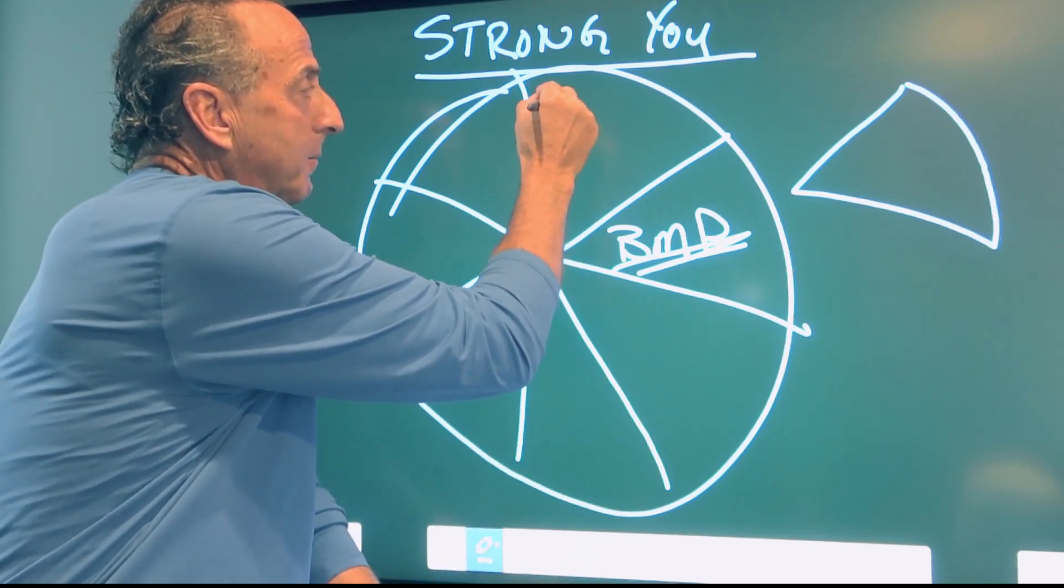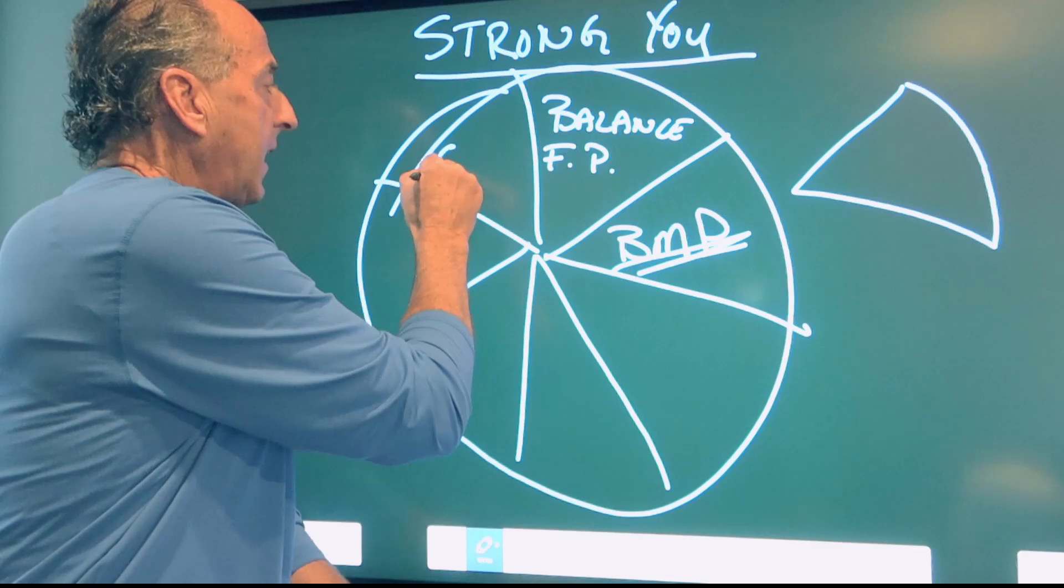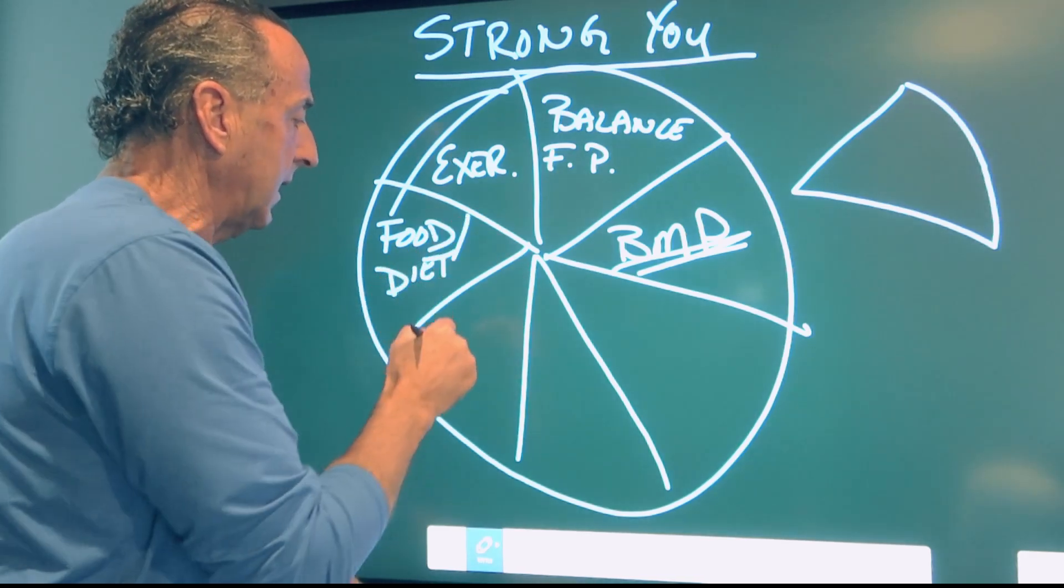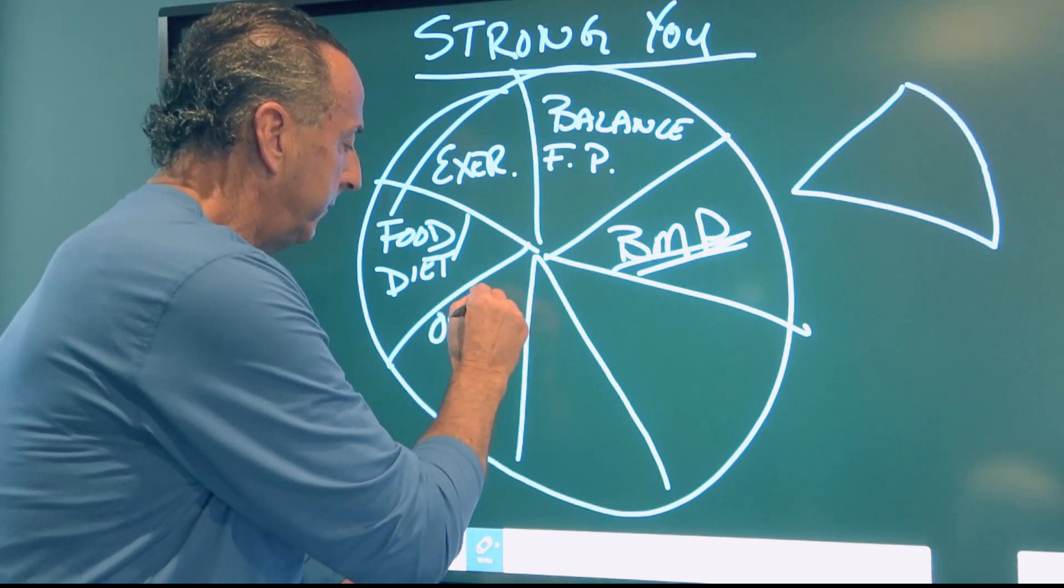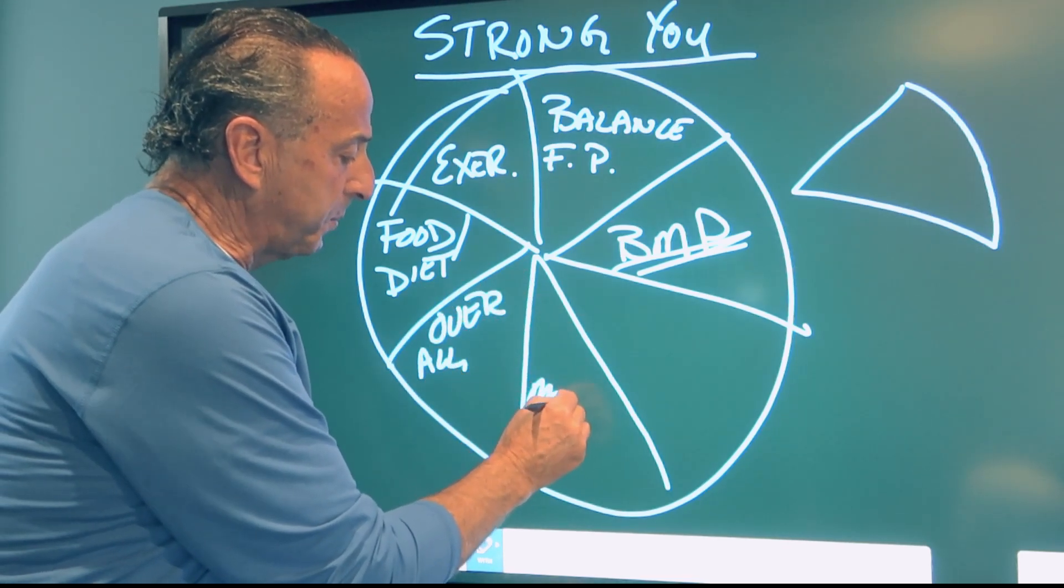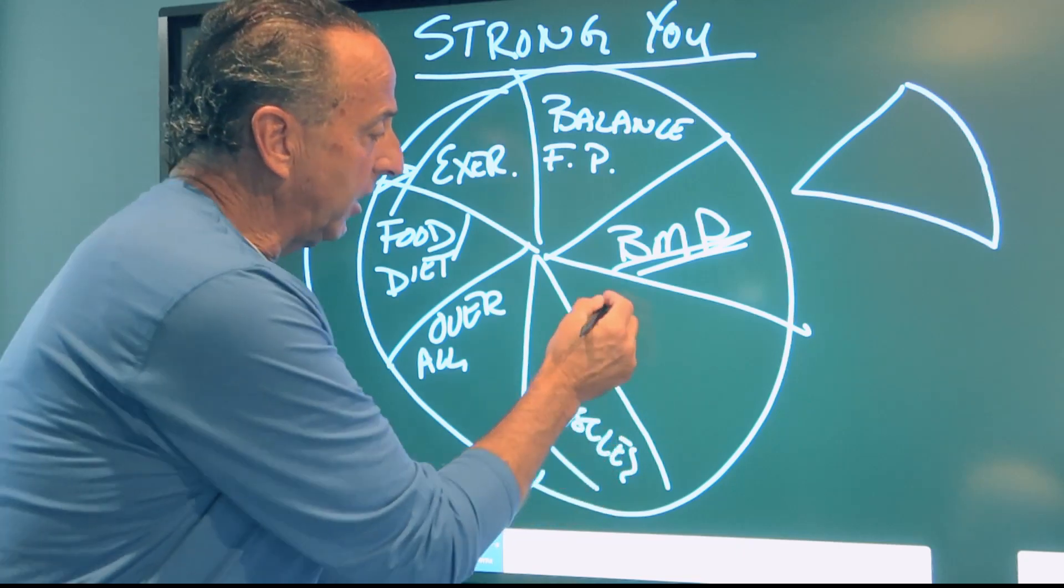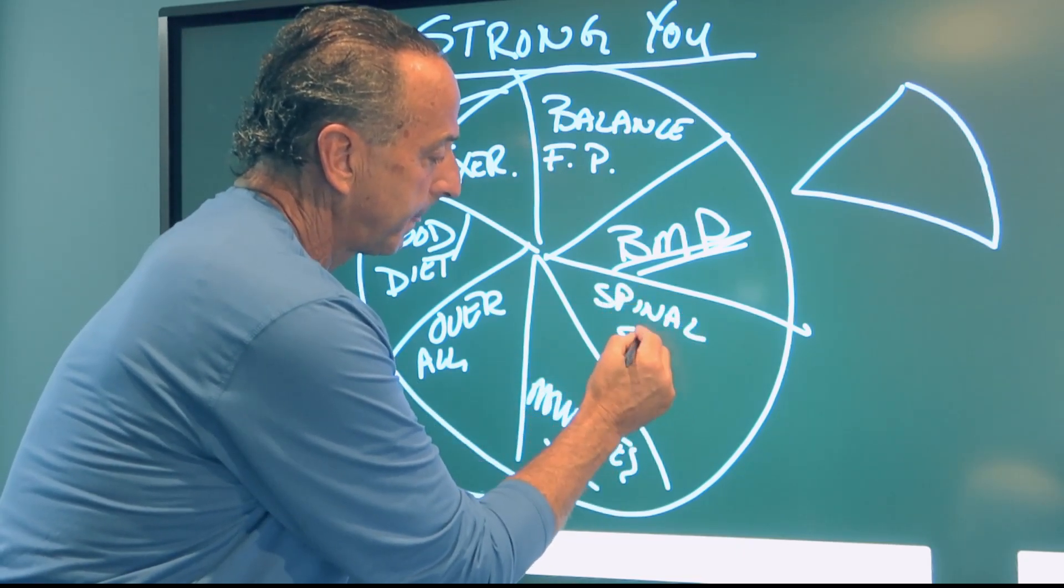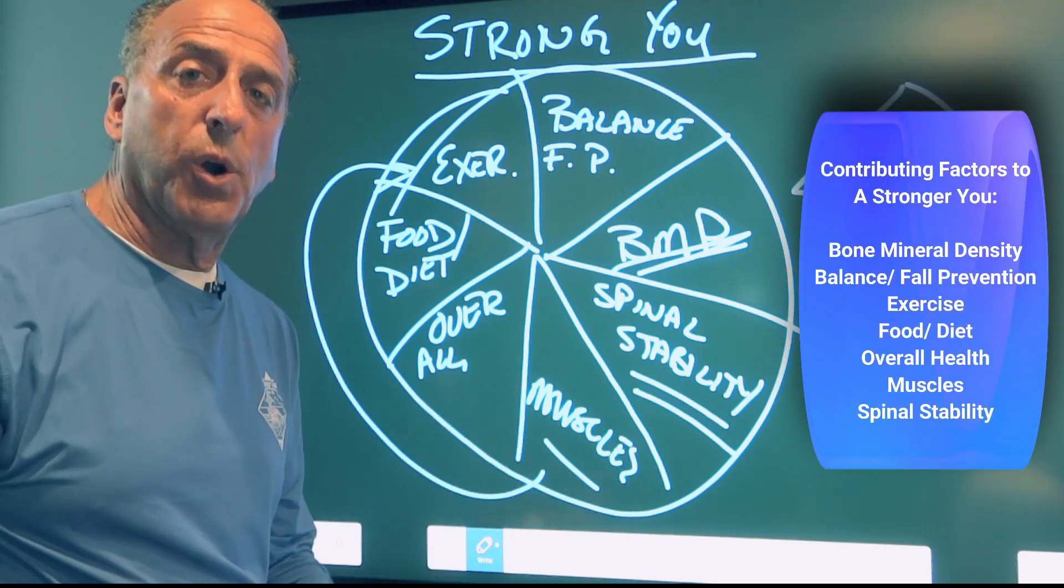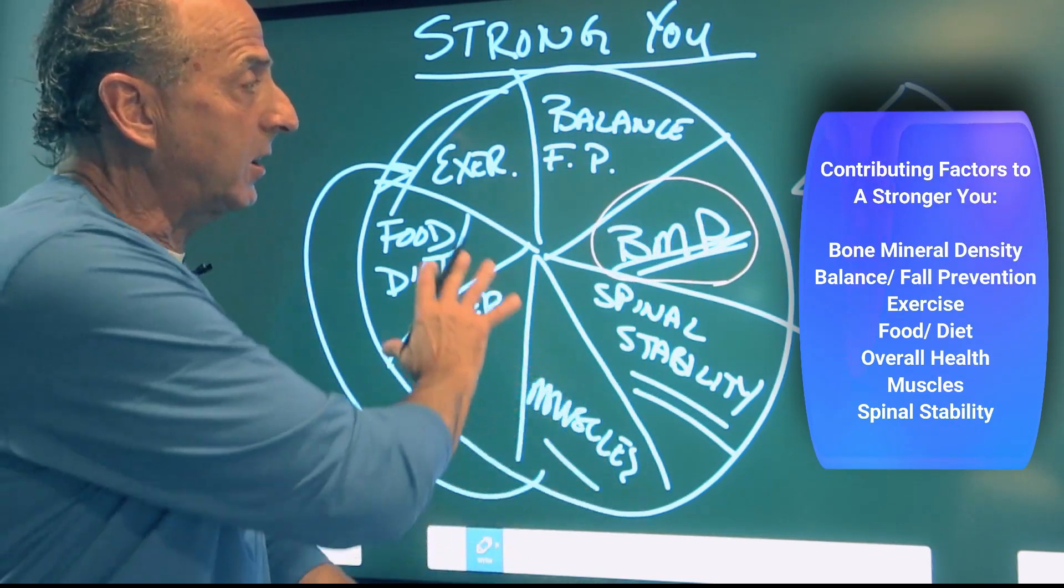So they come in first of all with bone mineral density issues. With bone mineral density issues you can't just take that piece of the pie out and work on that. The whole body works together. So we have to look at other factors like balance, fall prevention, exercise, food or diet, your overall health, your muscles, and then the last one here I like to call spinal stability.